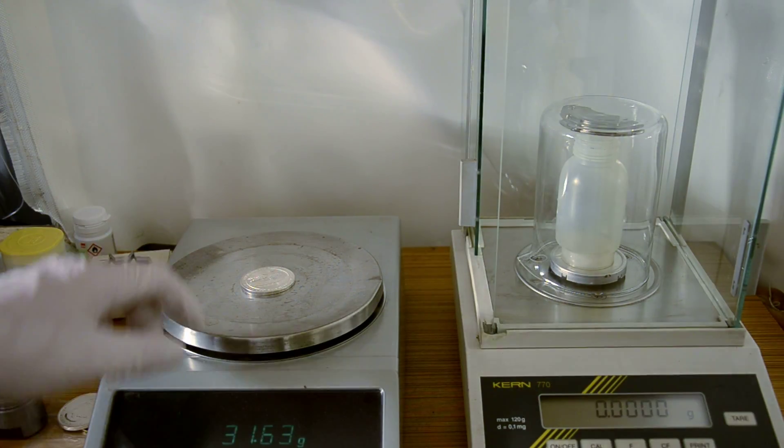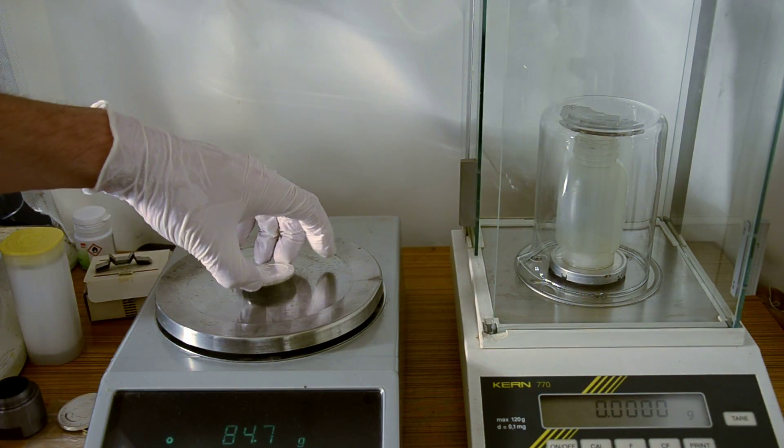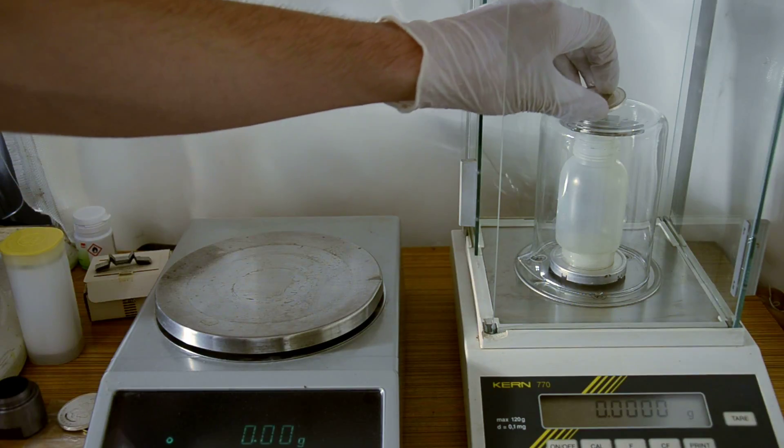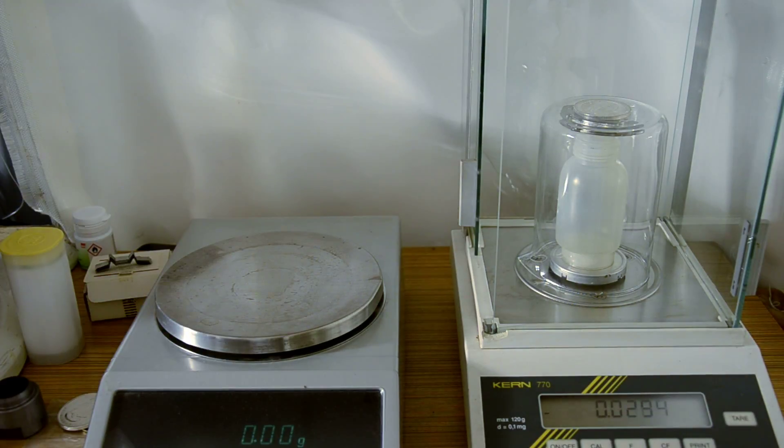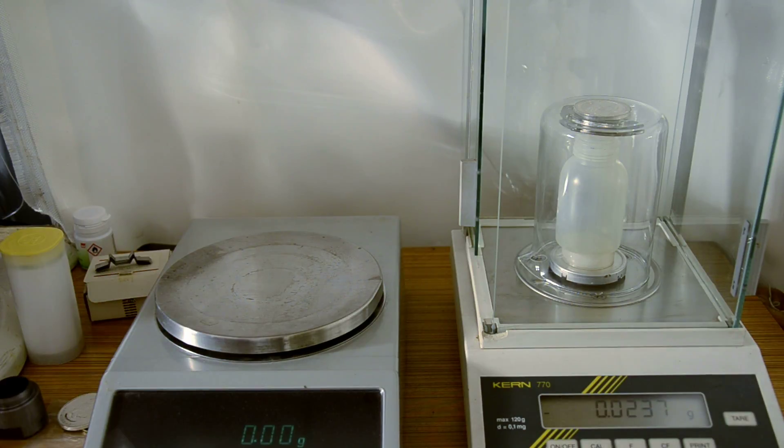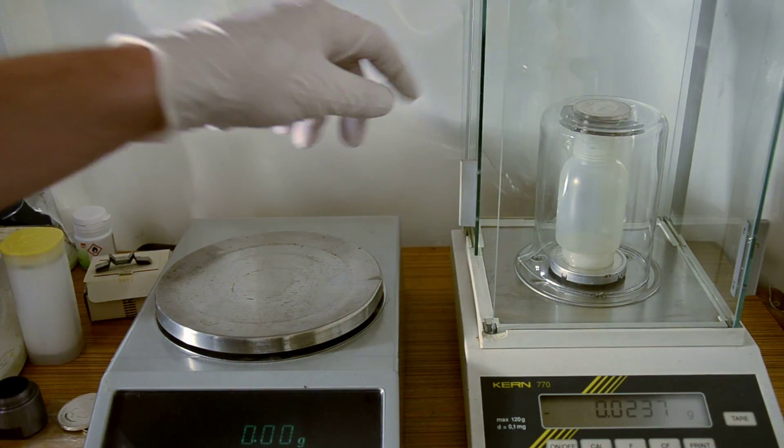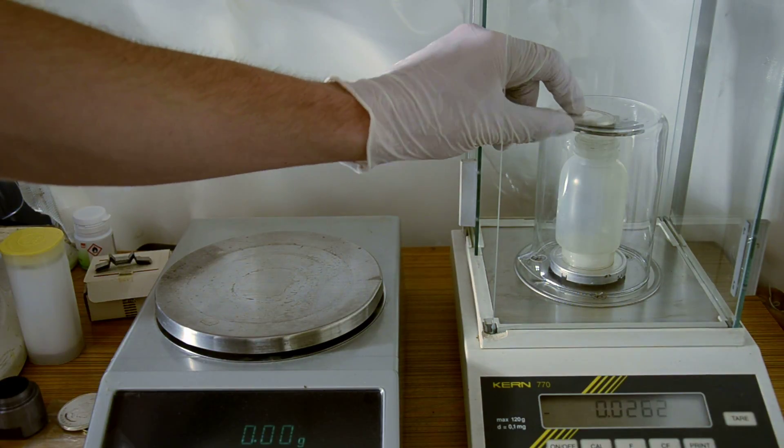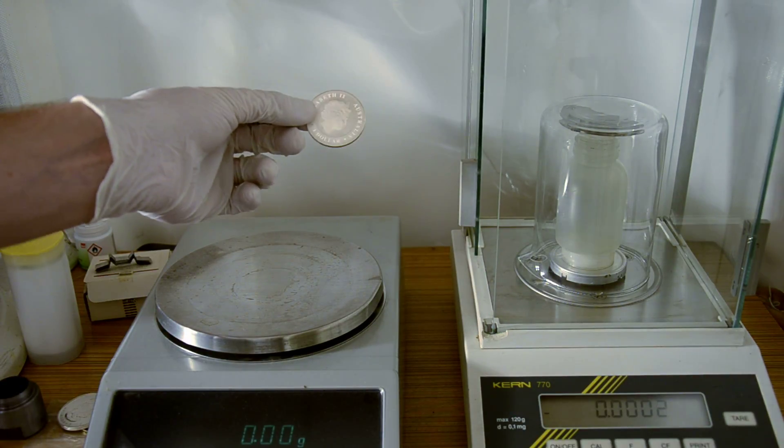Now the Australian crocodile weighs a little bit more. And if we put it on the magnetic scale now, you get a negative number, about 24 milligrams. So this coin is paramagnetic, but this is not a fake coin.